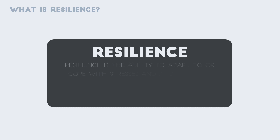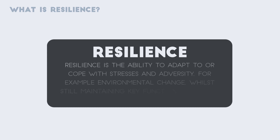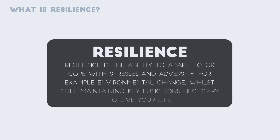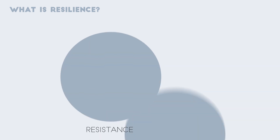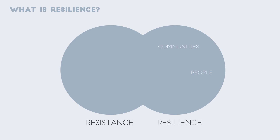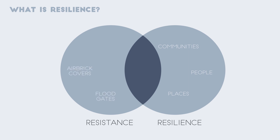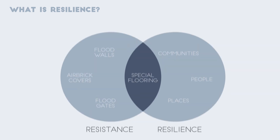Resilience is about the ability to maintain functions necessary to live your life during a flood event, or to be able to recover quickly without long-term impacts. People, communities, infrastructures and places can all be resilient. There is also an overlap between resilience and resistance. Some forms of resilience are physical, such as home modifications — for example, special flooring that can tolerate flooding, is resistant to water damage, and also contributes to the building's resilience by enabling a quick return to normal after a flood event.